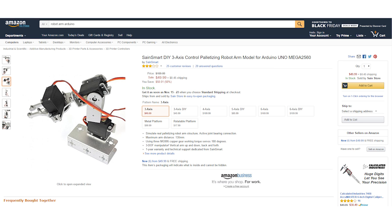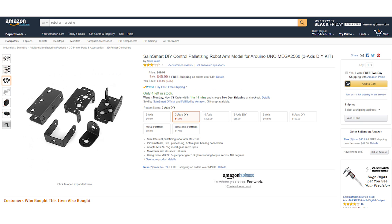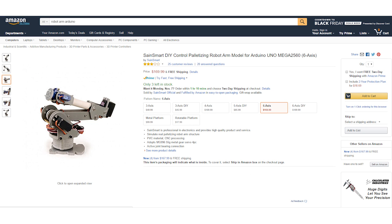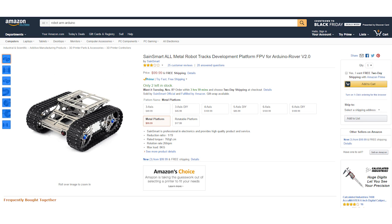The interesting part is, SainSmart provided different models based on the number of servo motors, giving you more options to choose between three axis, four axis, five axis and six axis. They also have a rotatable platform for $17.99 and the moving metal platform for $99.99. You can find the SainSmart robot arm on Amazon.